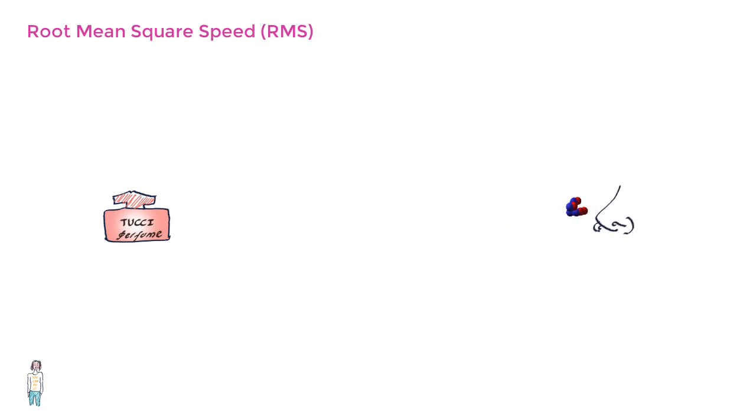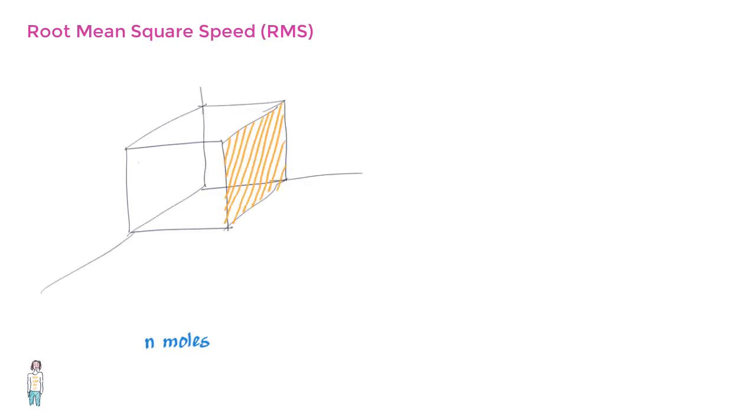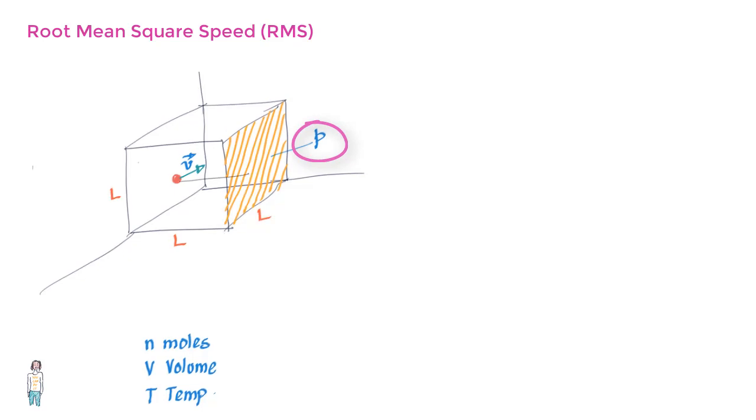To understand the concept of RMS speed, let us take n moles of an ideal gas in a cubical box of volume V and we will keep the temperature of the box at T. Then the question is how can you relate the pressure p of the gas that it exerts on the walls and the speed of the molecules.